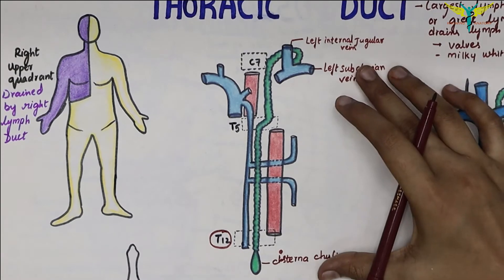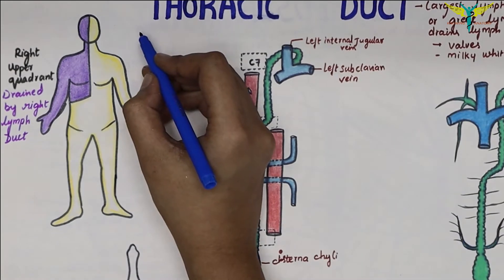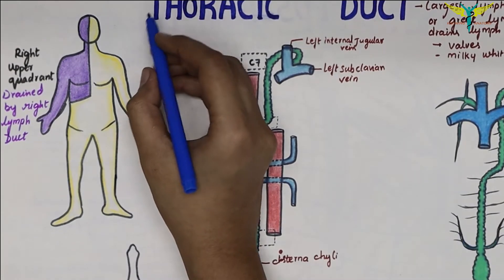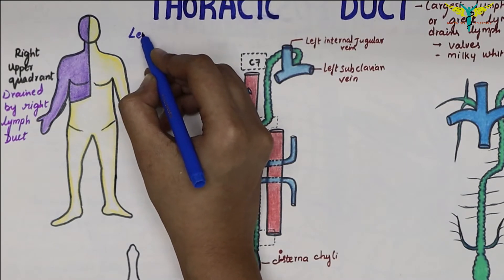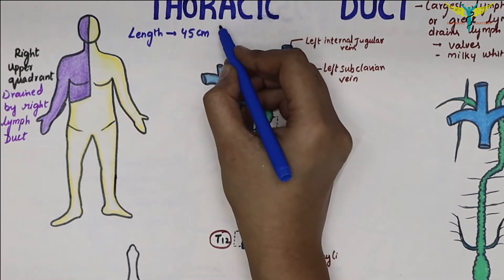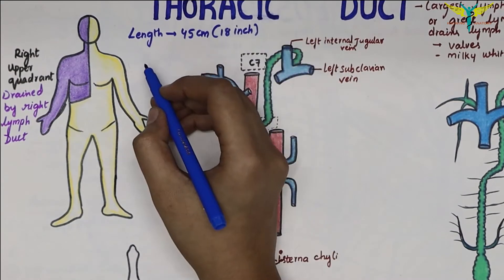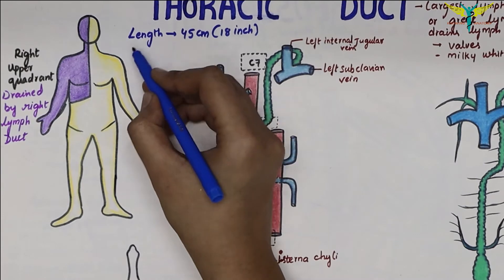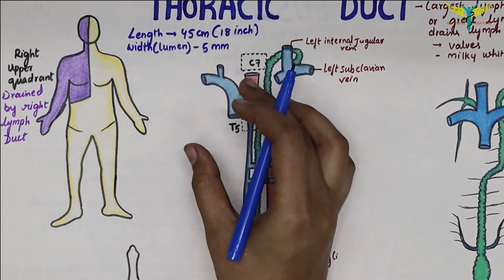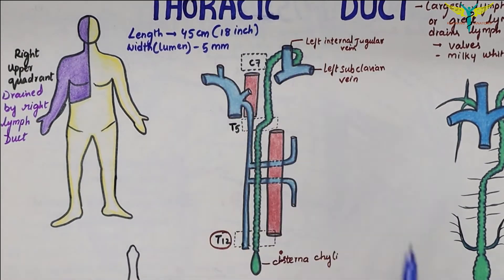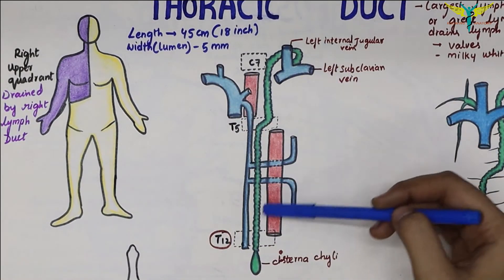The measurements of the thoracic duct are: length 45 centimeters or 18 inches, and the width of the lumen is 5 mm. This lumen may narrow sometimes in the middle.